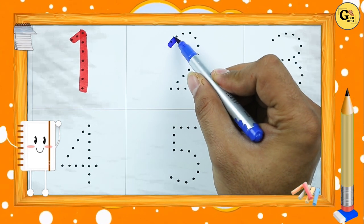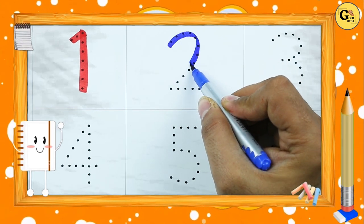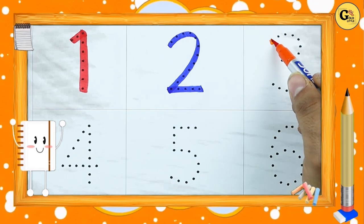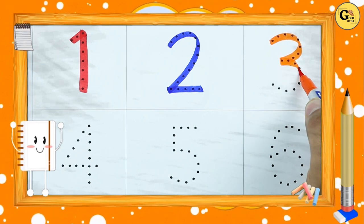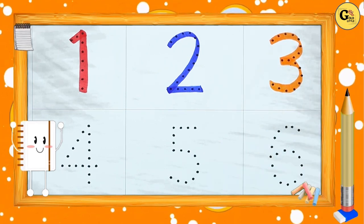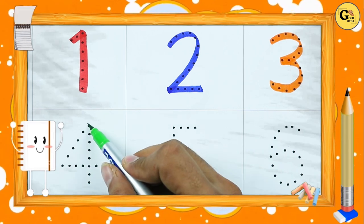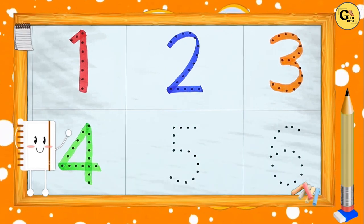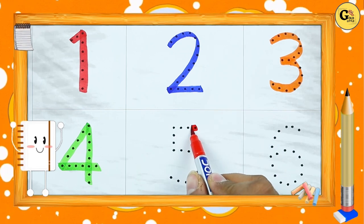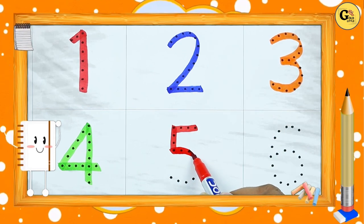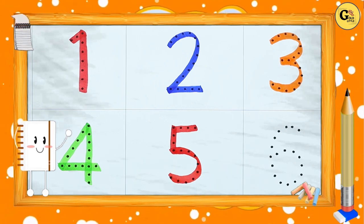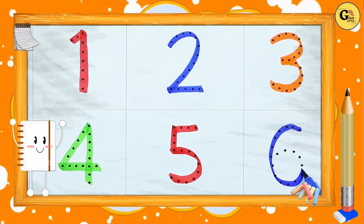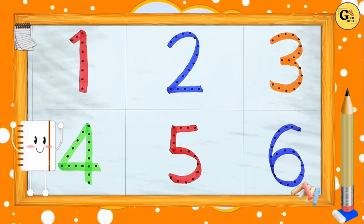Number 2 — it's 2 with blue color. It's number 3 — yes, 3 is with orange color. It's number 4 with green color — it's number 4. It's number 5 with red color — number 5. It's number 6 with blue color — number 6.